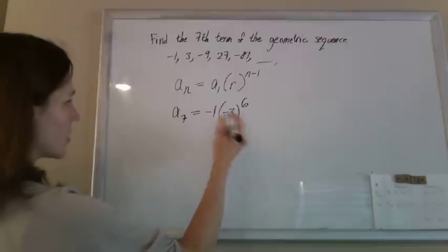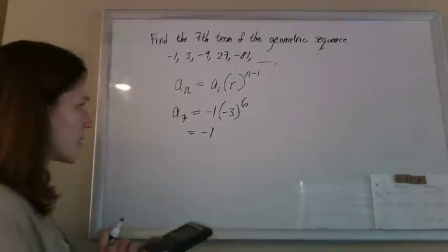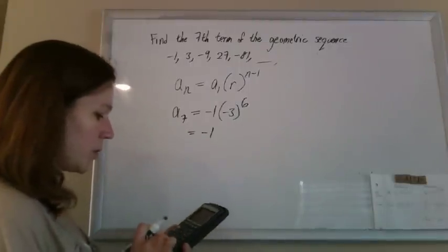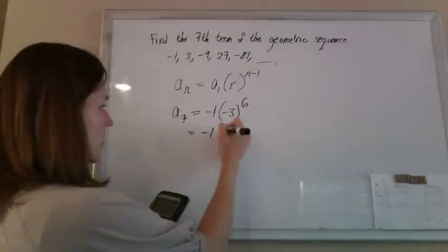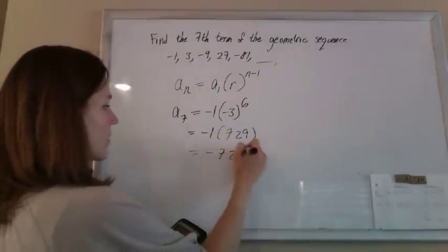So, just work this out. This is negative 1 and negative 3 to the 6th. Because it's a negative to an even power, it's going to be positive, so 3 to the 6th is 729. And then negative 1 times 729 is negative 729.